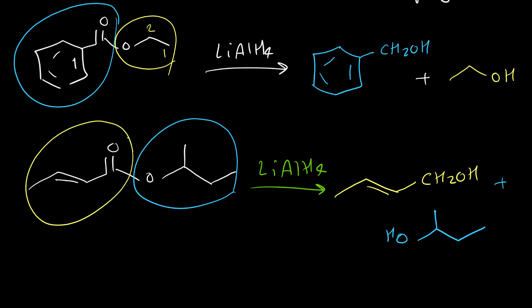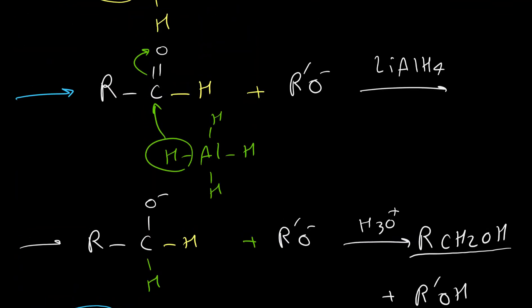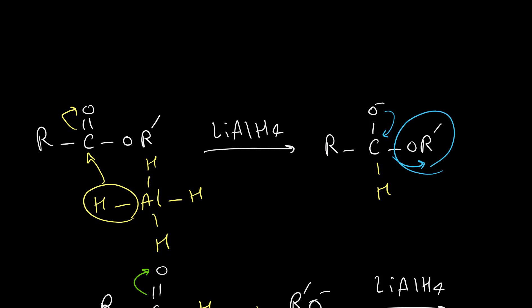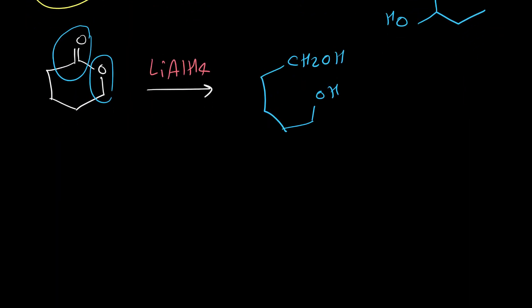Here is another example: if we have a cyclic ester reacted with LiAlH4, we convert both the carbonyl group (to CH₂OH) and the oxygen end to an alcohol, writing the rest of the chain. Looking at the mechanism, the OR′ group would normally leave, but because the molecule is cyclic, that OH remains at the end of the chain instead of leaving the molecule.